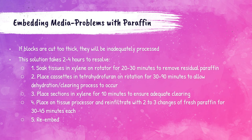If paraffin blocks are cut too thick they will be inadequately processed. To resolve this, which takes around two to four hours, the tissue must first be soaked in xylene on a rotator for 20 to 30 minutes to remove residual paraffin. The cassettes are then placed in tetrahydrofuran, a universal solvent, on the rotator for 30 to 90 minutes to dehydrate and clear the tissue — at the end of this step the tissue should be transparent. The sections are then placed in xylene for 10 minutes to ensure proper clearing, then put on the tissue processor and infiltrated with two to three fresh changes of paraffin for 30 to 45 minutes each, after which the tissue can be re-embedded.